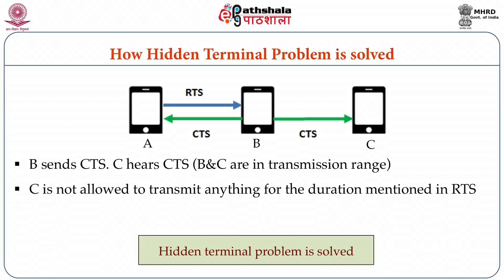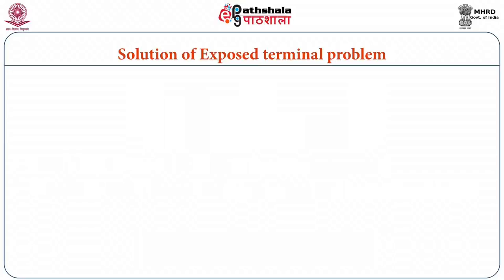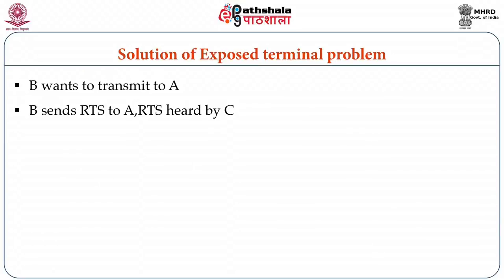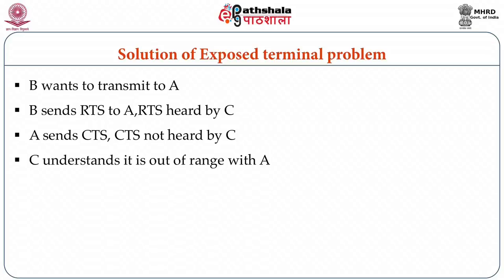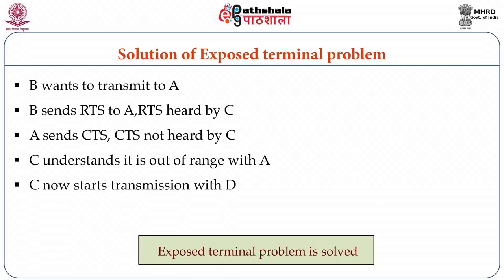Before transmitting, both devices take the consent of the receiver, and the receiver, only if free, allows them to transmit — hence no collisions. For the exposed terminal problem: B is transmitting to A. C wishes to transmit to D but was unnecessarily waiting. Now, when B sends RTS to A, this RTS is heard by C. A sends CTS, but the CTS is not heard by C since A is out of range of C. C understands from the RTS that B and A wish to communicate, and that if it transmits to D, there will be no collision. So it sends RTS to D, and on receiving CTS from D, it starts transmitting. Exposed terminal problem is solved.